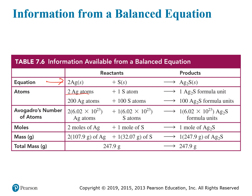Two silver atoms plus one sulfur atom yields one formula unit of silver sulfide. Or you can scale it up by multiplying everything through by some whole number. Take a hundred times as much and you have 200 silver atoms plus 100 sulfur atoms yields 100 silver sulfide formula units. Or we can scale it up even more and multiply everything by Avogadro's number: two times Avogadro's number of silver atoms plus one times Avogadro's number of sulfur atoms yields one times Avogadro's number of silver sulfide formula units.